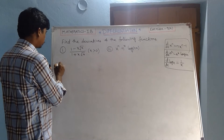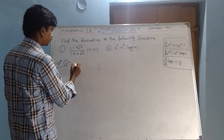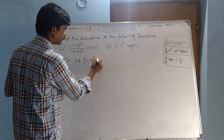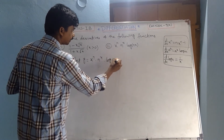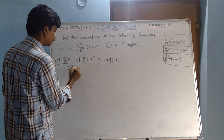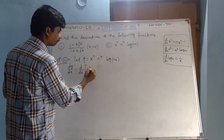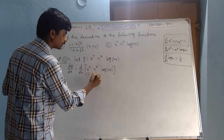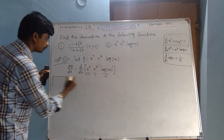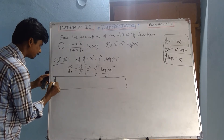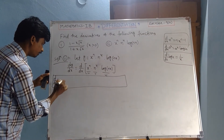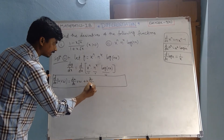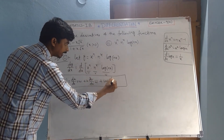Second problem: let y equal x to the power of n times n to the power of x times log nx. This is u, this is v, this is w. We use the product rule formula: d/dx of uvw equals du/dx times vw, plus u times dv/dx times w, plus uv times dw/dx.